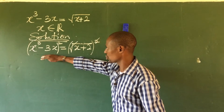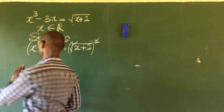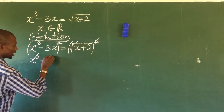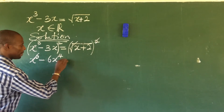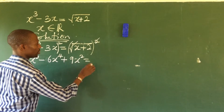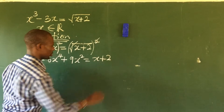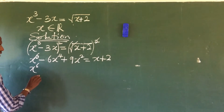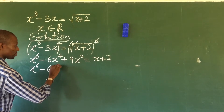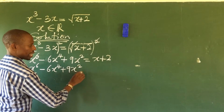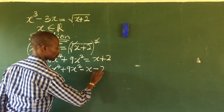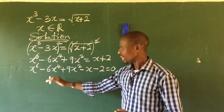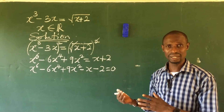We use binomial expansion to expand the left side. Expanding gives us x to the sixth minus six x to the fourth plus nine x squared, equal to x plus two. We then move everything on the right-hand side to the left-hand side, giving us: x to the power of six minus six x to the power of four plus nine x squared minus x minus two equals zero. This is a sextic — a sixth-degree polynomial equation.